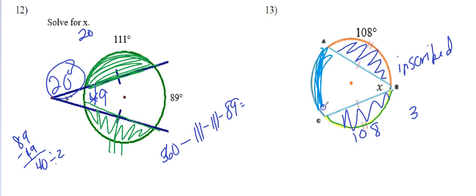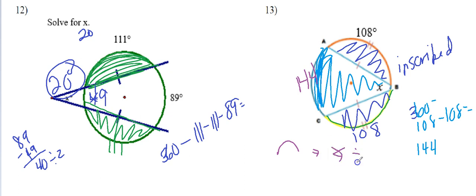So I'm going to take my 360, subtract 108, subtract 108, and that's going to give us 144. So now I know that this value here is 144.